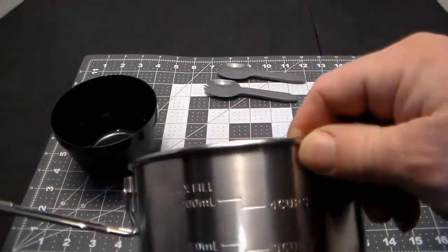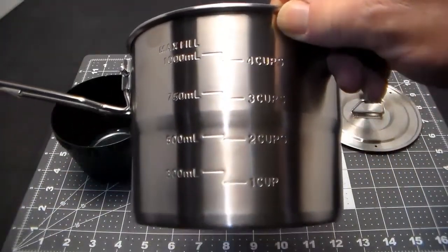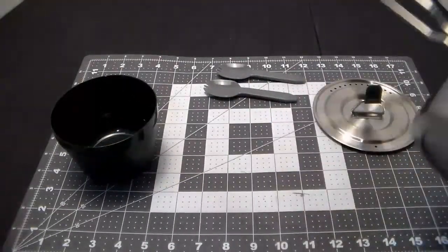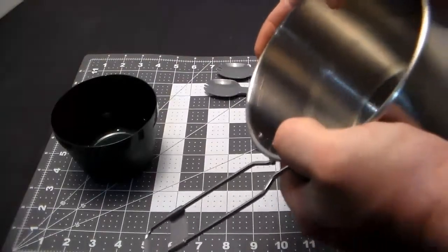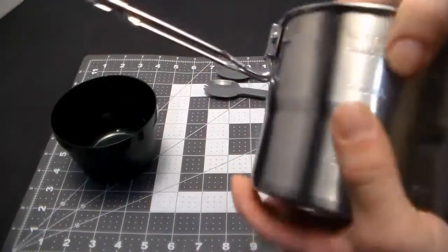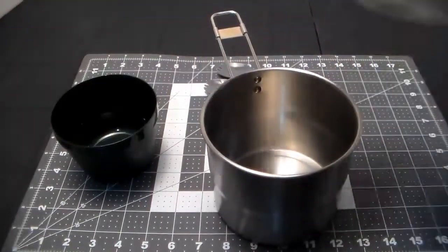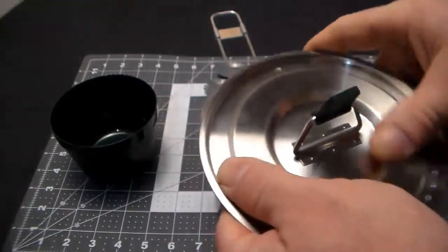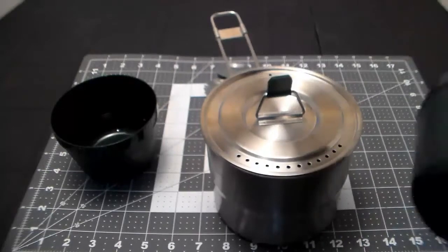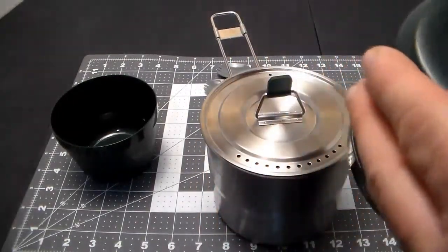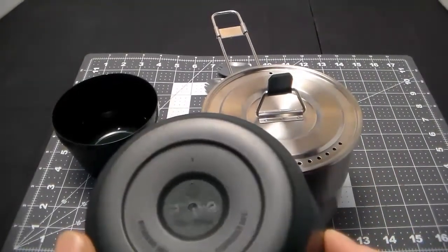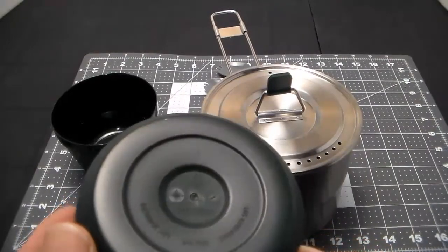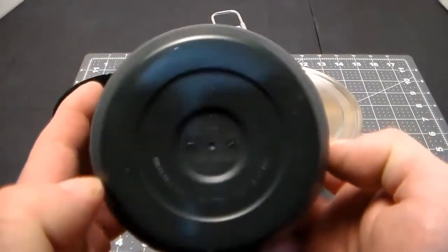Graduation stamped into the stainless steel in both milliliters and cups, very nice. I'm putting quite a bit of force on that pot and it's not deforming. The construction is pretty solid. I can flex the lid a little bit but that's to be expected. The bowls are typical Stanley construction. In the bottom it says 12 ounce or 354 milliliter, microwave safe, BPA free, dishwasher safe.